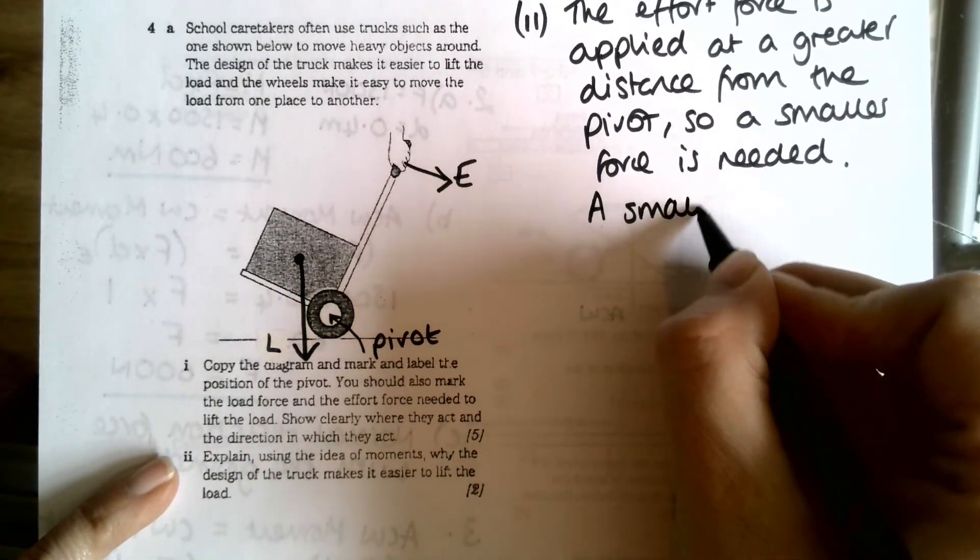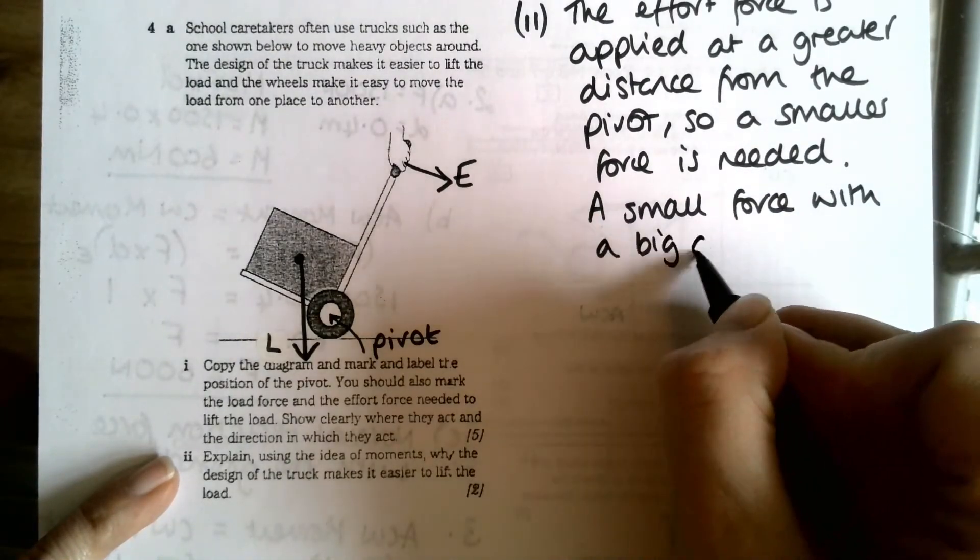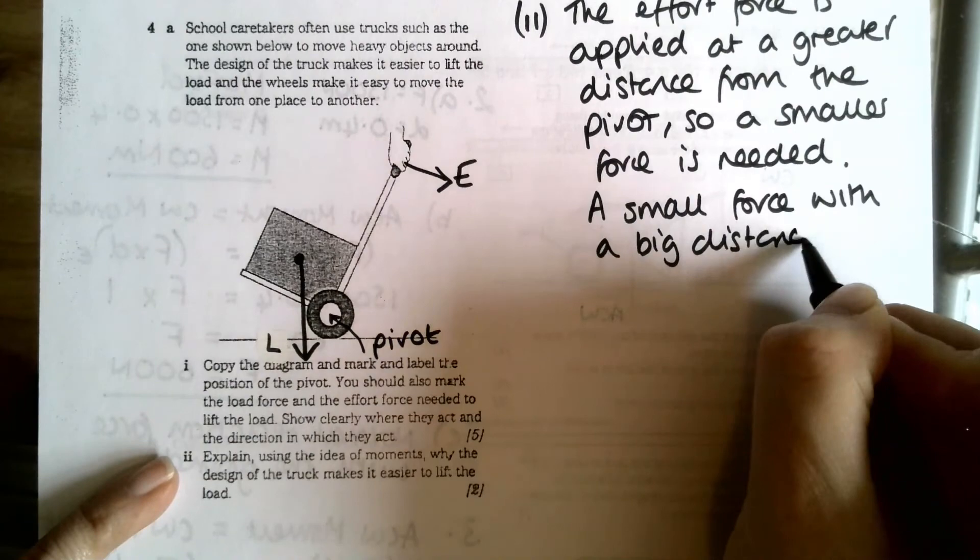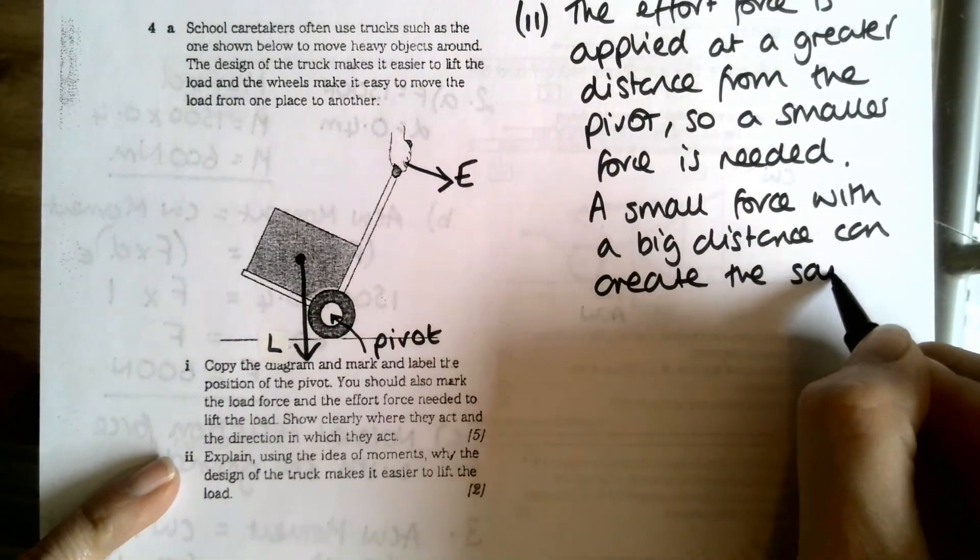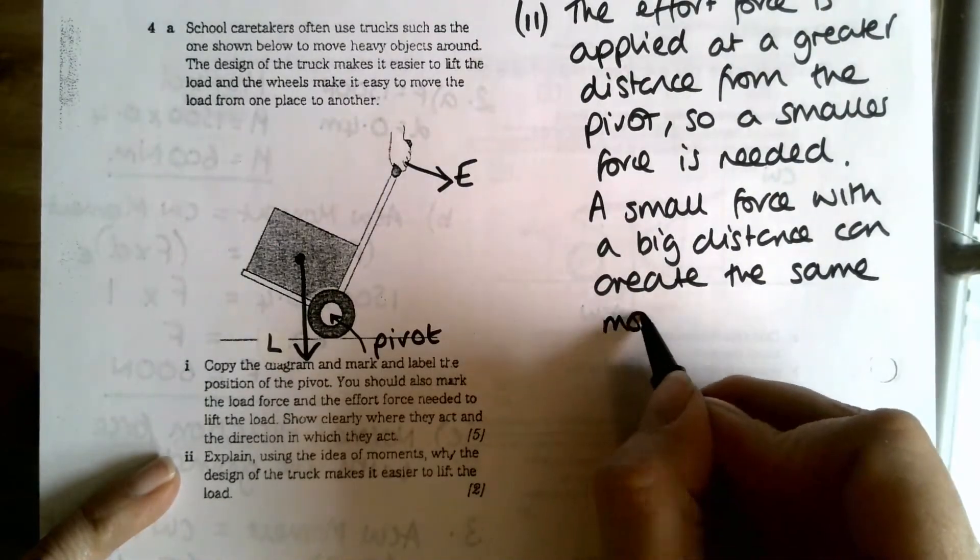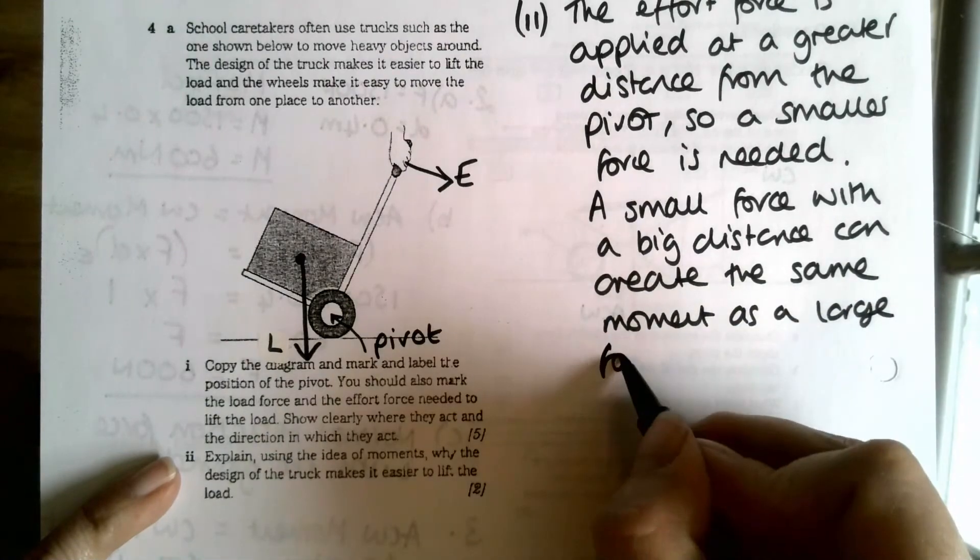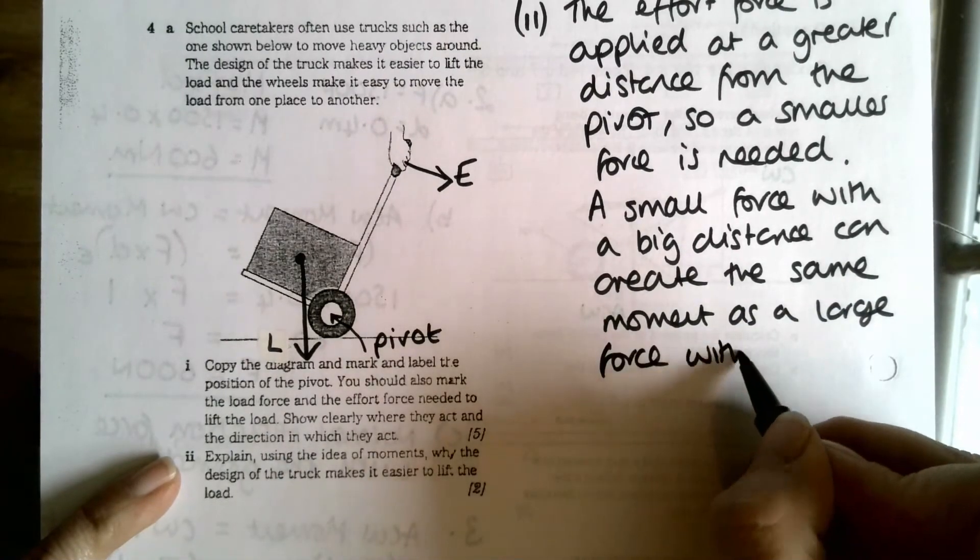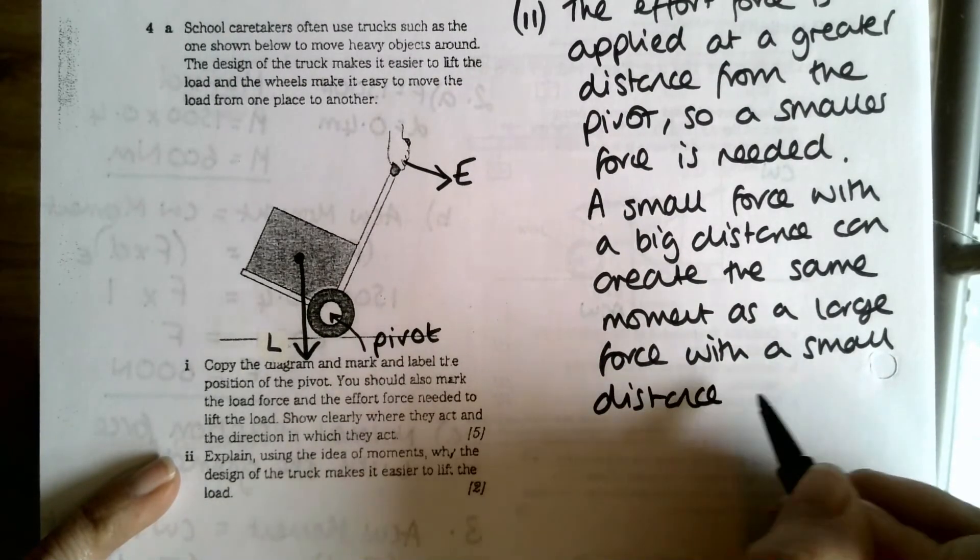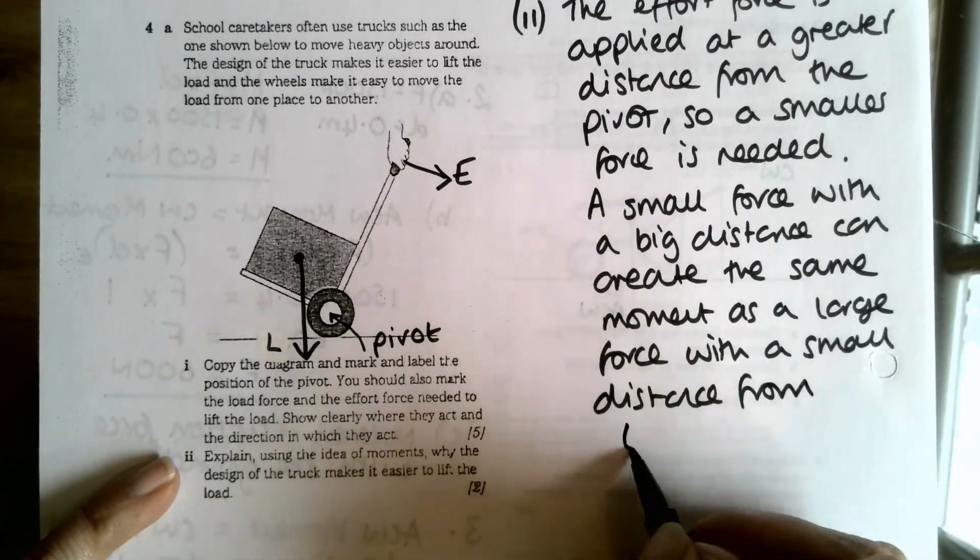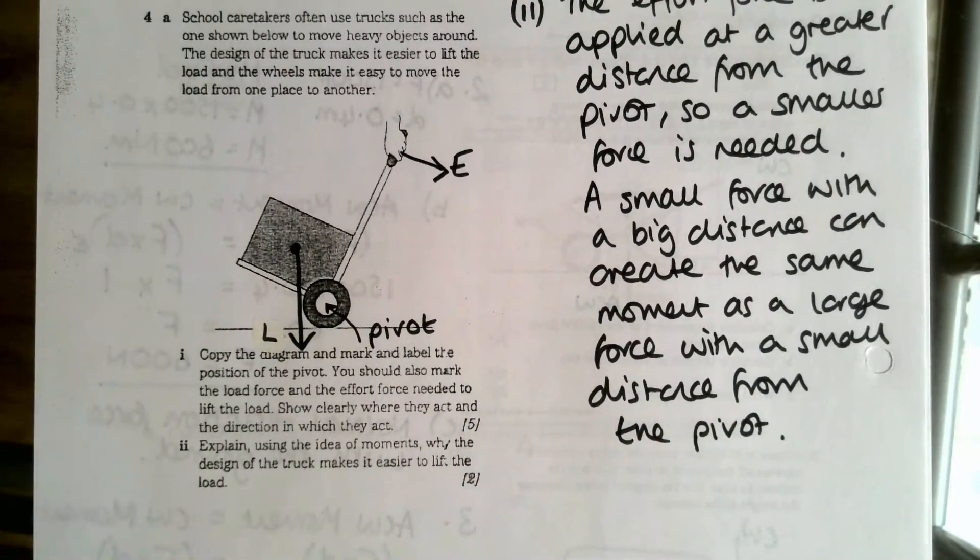So smaller force is needed. A small force with a big distance can create the same moment as a large force with a small distance. I should have said really from the pivot earlier, so I'll say it now, from the pivot. Okay, right.